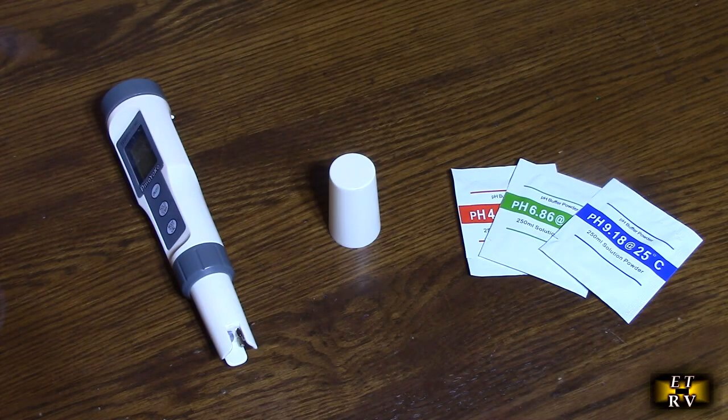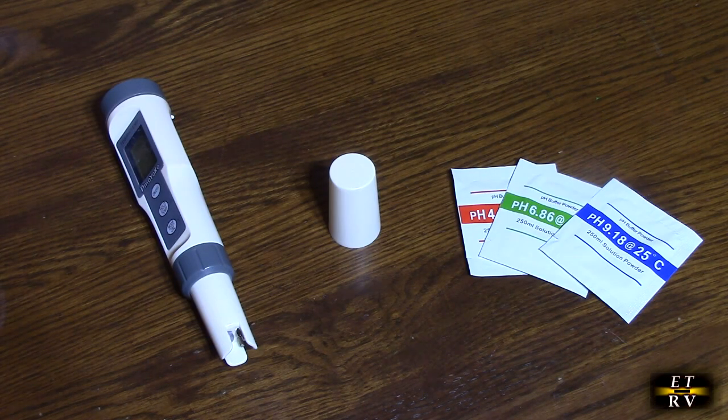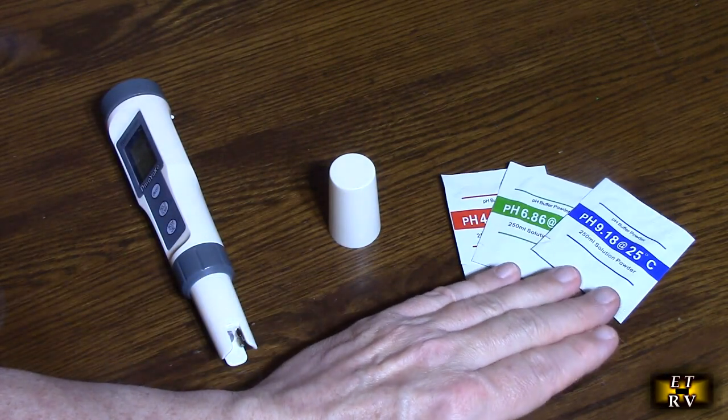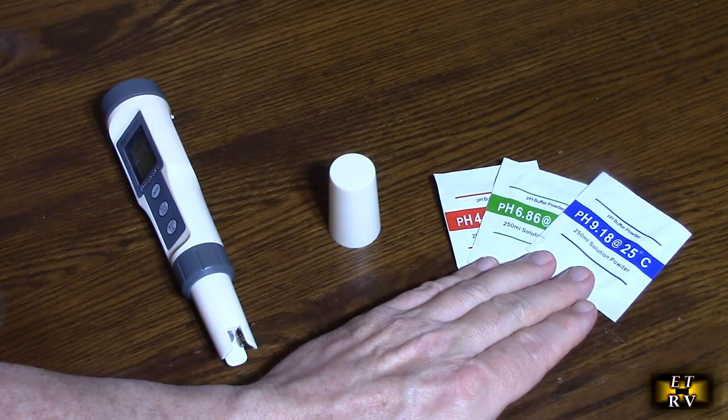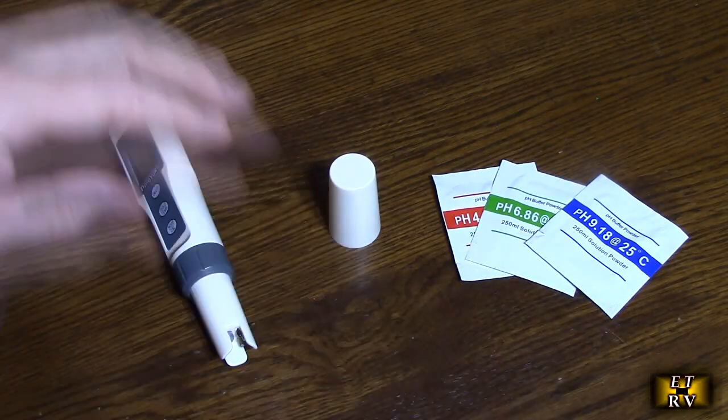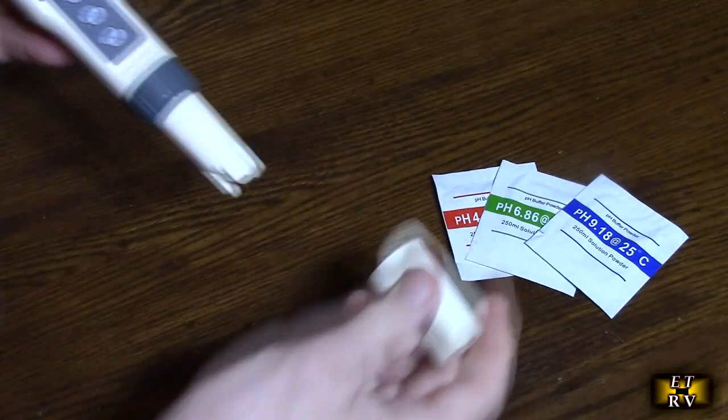It comes in a nice instruction booklet letting you know how to use the unit. These little packets allow you to put them in a fixed amount of water and you can calibrate the pH. If you want to be extremely accurate, you can do that. But it comes accurate right out of the box.